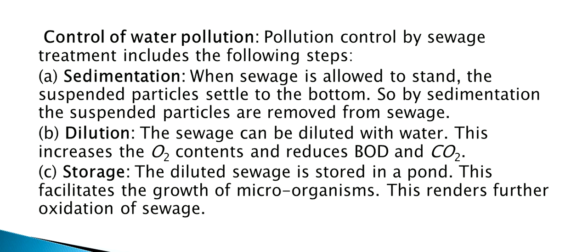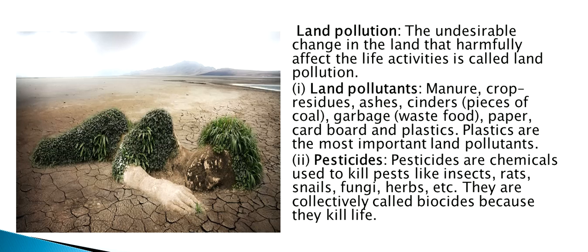Water pollution can be controlled by sewage treatment, which includes the following steps. Sedimentation: when sewage is allowed to stand, suspended particles settle to the bottom and are removed. Dilution: sewage is diluted with water, which increases the oxygen content and reduces BOD and CO2. Storage: the diluted sewage is stored in a pond, facilitating growth of microorganisms, which renders further oxidation of sewage.